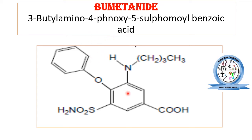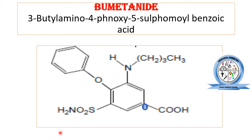Bumetanide is another example of a loop diuretic. Its chemical name is 3-butylamino — indicating a butyl side chain at the third position with an amino group — 4-phenoxy, meaning a phenoxy functional group at the fourth position, and 5-sulfonyl benzoic acid. Bumetanide belongs to the class of 5-sulfonyl-3-amino benzoic acid derivatives. The numbering of bumetanide goes: position one, two, three, four, and so on.